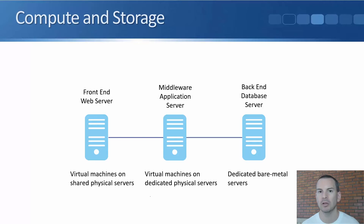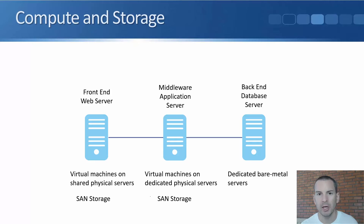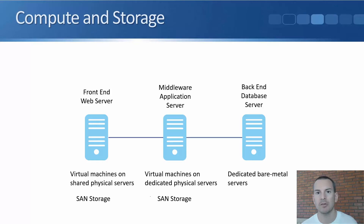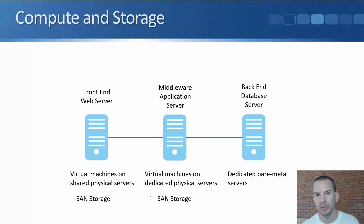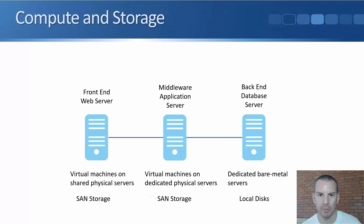The next thing to consider is storage. For the front-end web servers and middleware application servers, we're going to have multiple servers but they will all have exactly the same content. We're going to put them into a server farm, and the easiest storage option is SAN storage. For the back-end database server, we have high performance requirements — we need a certain amount of IOPS — so we're going to use local disks in that dedicated bare metal server to get the highest possible storage performance. That's our compute and storage decisions taken care of.